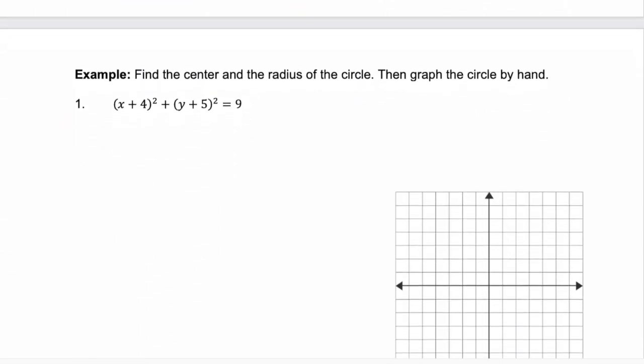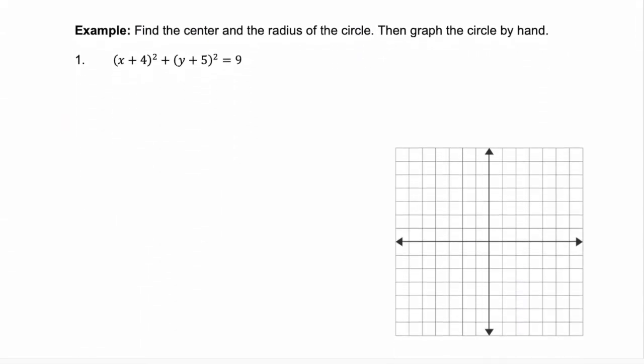Now, what if you're given an equation for a circle and you're asked to graph it by hand? Well, recall what the equation for a circle looks like. It's x minus h squared plus y minus k squared equals r squared. Well, first we can find the center.